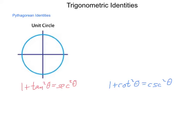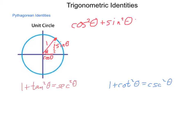A very common identity used in mathematics and trigonometric relationships is the Pythagorean identities. If we pick any location on the unit circle given by some angle theta, we can construct a right triangle at that location with an x-value of cosine of theta and a y-value of sine of theta. Since this is the unit circle, our radius is 1. By the Pythagorean theorem, a² + b² = c², meaning cosine squared of theta plus sine squared of theta equals 1 squared.